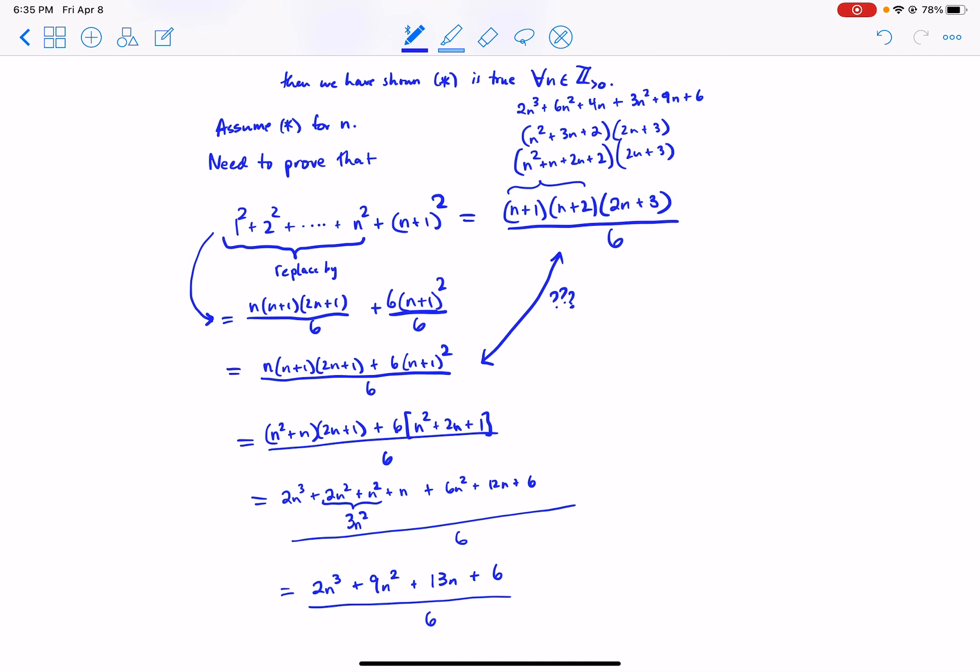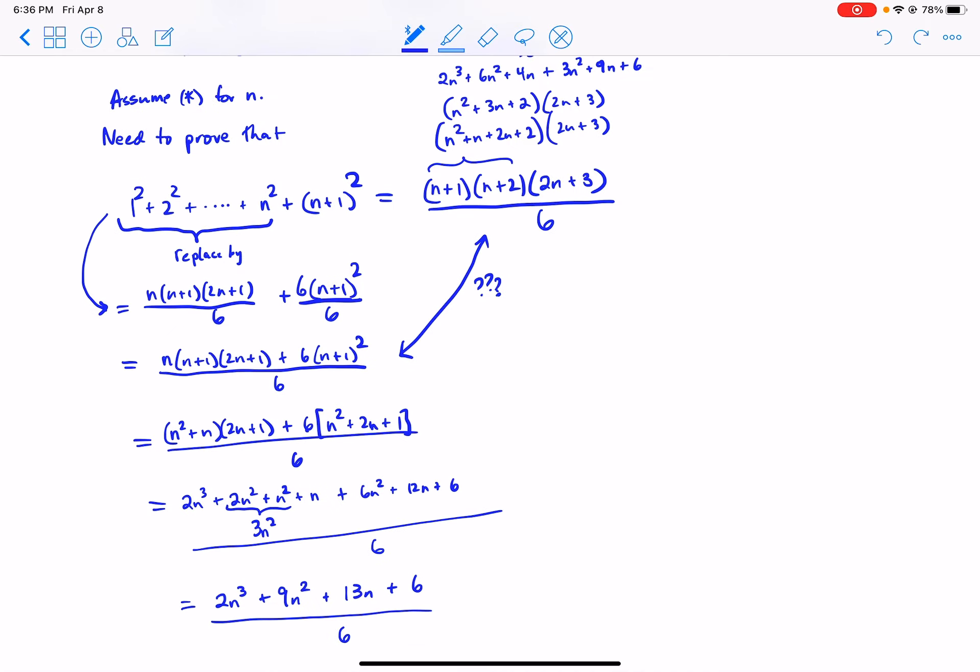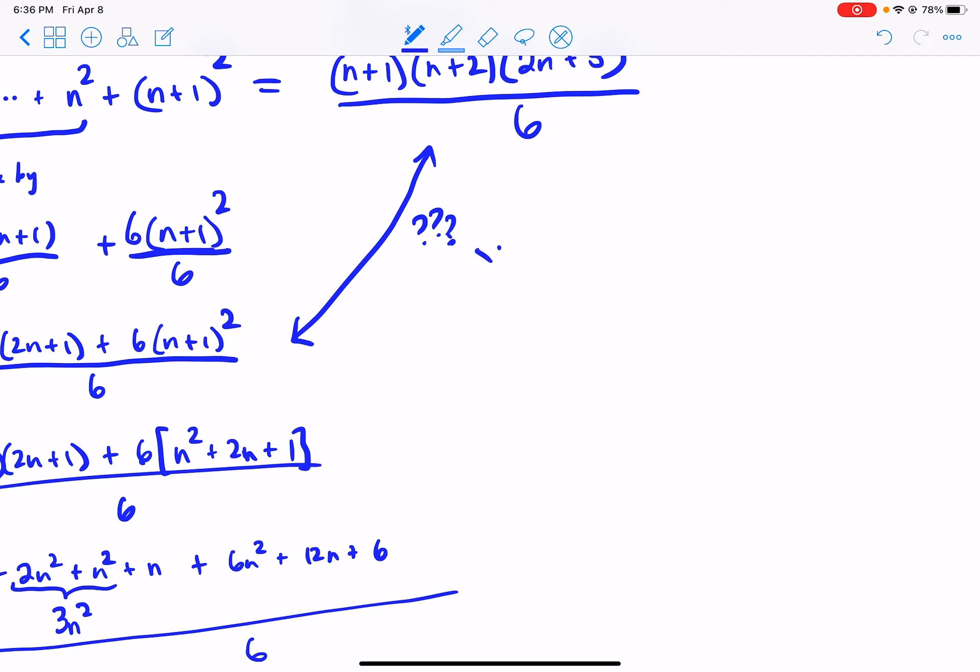And let's look up here and see if we get the same thing. How many n to the thirds? 2. Good. How many n squareds? 3 and 6 is 9. And how many ns? 9 and 4 is 13. 13. And 6. 6. So, question mark, question mark becomes, yes, compare numerators.